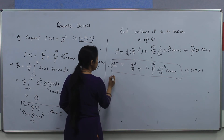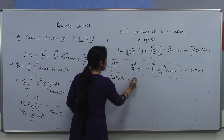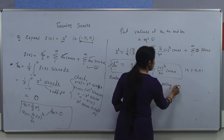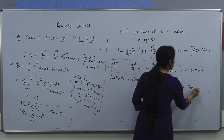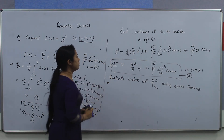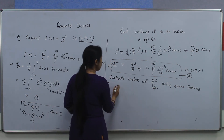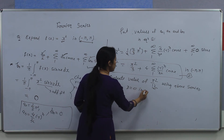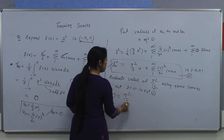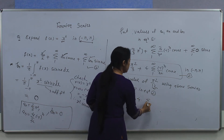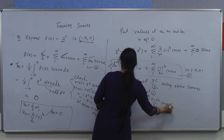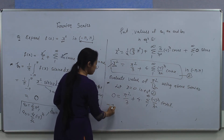Further, we have to evaluate the value of π²/12 using the above series. We can calculate the value — let it be equation number 2. We can put a particular value of x. Taking x equal to 0 in equation 2, it will be: 0 equals π²/3 plus 4 times summation 1 to infinity of minus 1 to the power n divided by n squared, times cos(nx).